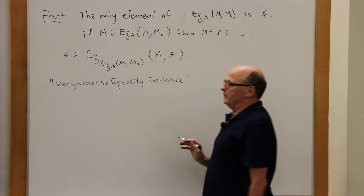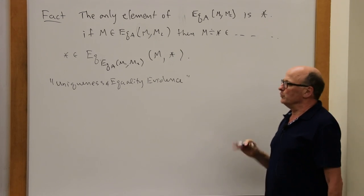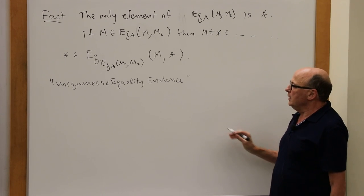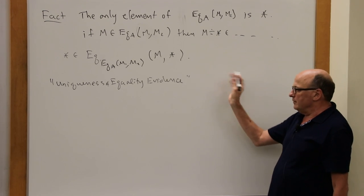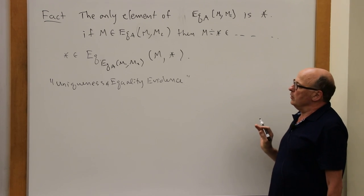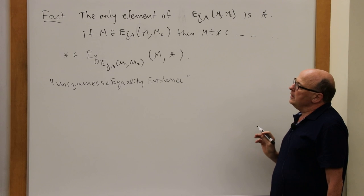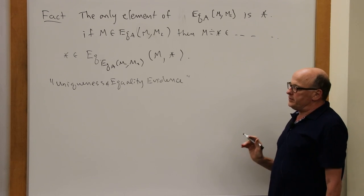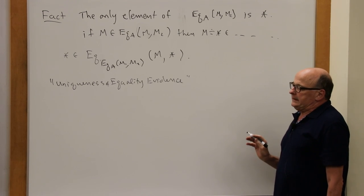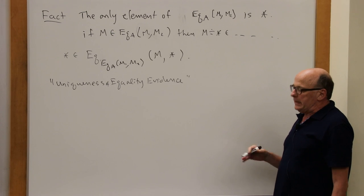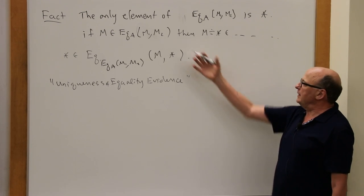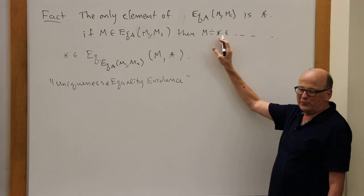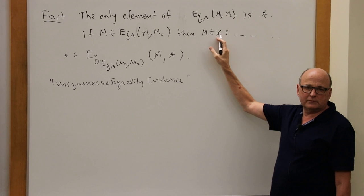I'm stating an equation about elements of this equality type and I'm stating it internally, meaning the equality type is inhabited. That's true because when it's judgmentally the case, this is inhabited by star. It's called uniqueness of identity proofs, or equality proofs — I'll call it uniqueness, or sometimes unicity.